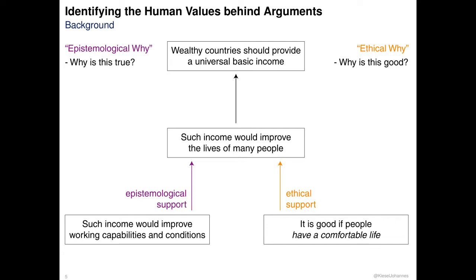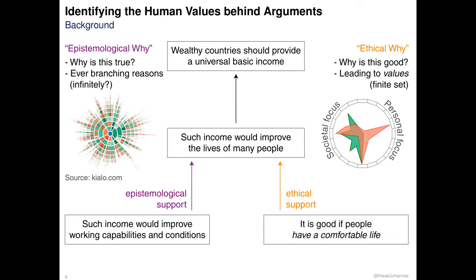Now, argument mining so far has focused on epistemological support. This is natural, as this is the kind that is more often stated explicitly, especially in the kind of discussions that make up our corpora. However, epistemological and ethical support are indeed quite different phenomena that warrant different approaches. One particular difference is that epistemological reasoning branches out considerably, as illustrated by the discussion topologies of the webpage Kialo, shown on the left-hand side. Starting from the central blue circle, supporting premises depicted as green segments and attacking ones as red segments are further supported and attacked, and so on.